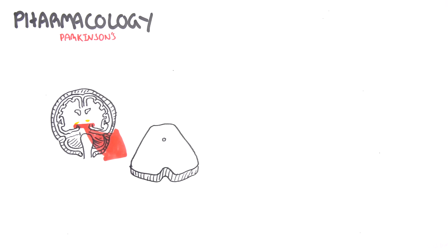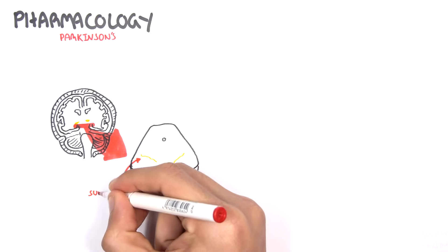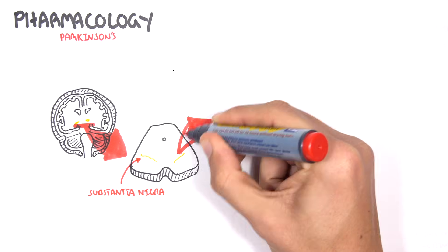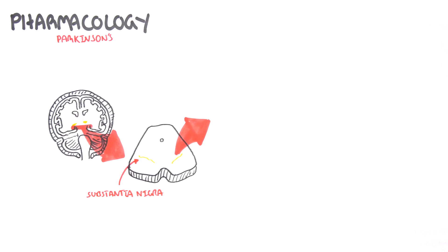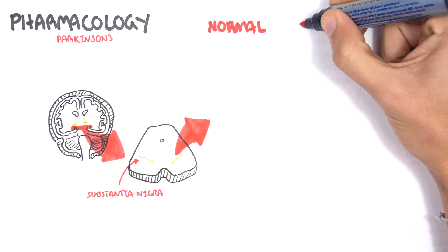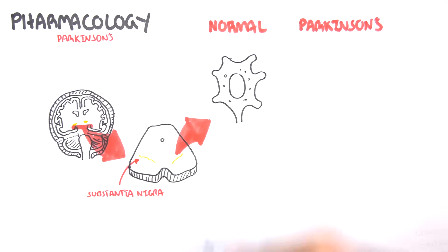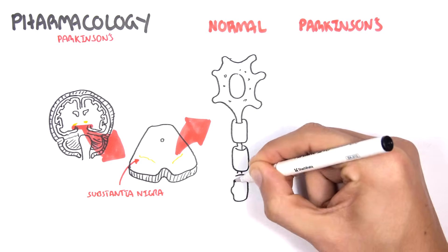In the substantia nigra you have important neurons arising from there known as the dopaminergic neurons. They secrete dopamine which is important in essentially contributing to a controlled movement pattern. Let's look at a normal neuron in this area and compare it to the one in Parkinson's disease. So let's look at the normal one first. Here we have a dopaminergic neuron.